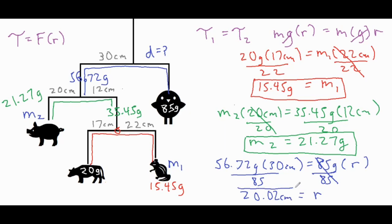So we have an r value of 20.02 centimeters as our lever arm, which was our final unknown, finding that distance from our pivot point up here to where the chick is hanging.